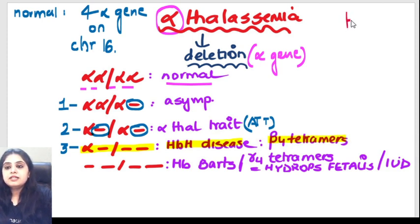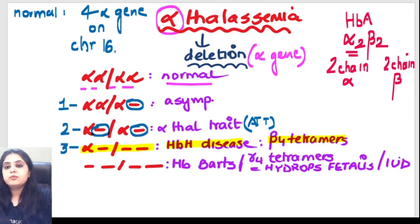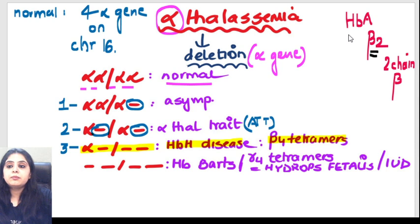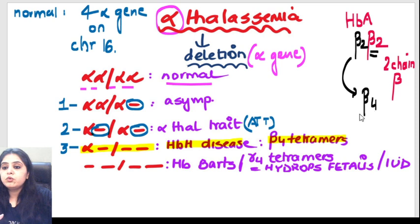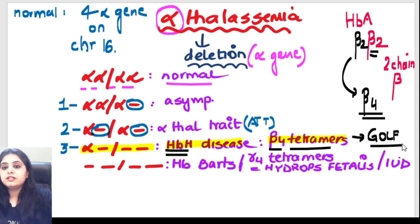When three alpha genes are deleted, it results in HbH disease, or beta-4 tetramers. Adult hemoglobin normally is alpha-2 beta-2: two alpha chains combine with two beta chains. But if alpha chain production is not happening, then what will the beta chains combine with? Beta has to combine with two more things, so it combines with beta itself. This forms beta-4 tetramers because alpha is not there.